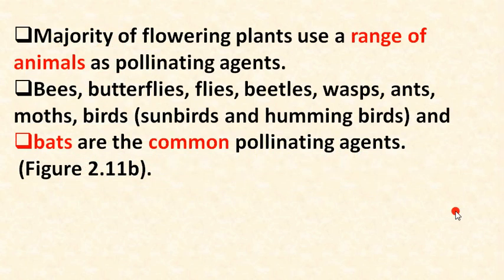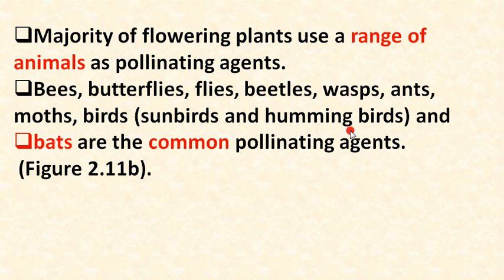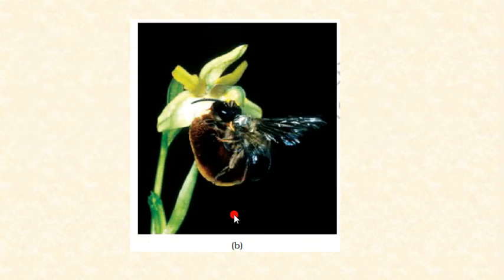In today's lecture we will continue with pollination and later we will see the outbreeding devices. Majority of flowering plants use a range of animals as pollinating agents. These include bees, butterflies, flies, beetles, wasps, ants, moths, birds including sunbirds and hummingbirds. Among all these, bees are the most common pollinating agents.